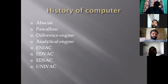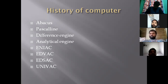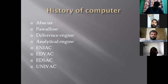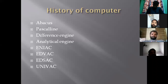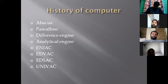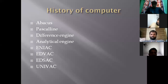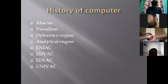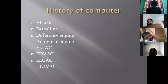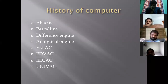The next one is ENIAC — Electronic Numerical Integrator and Computer. This was the first electronic computer. EDVAC is an Electronic Discrete Variable Automatic Computer, using binary operations. EDSAC is an Electronic Delay Storage Automatic Calculator, and was the first stored-program computer.